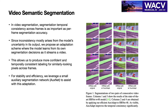Video Semantic Segmentation considers the problem of generating semantic segmentation results for every video frame, and in this problem, generating temporally consistent results is as important as generating accurate per-frame segmentation output.